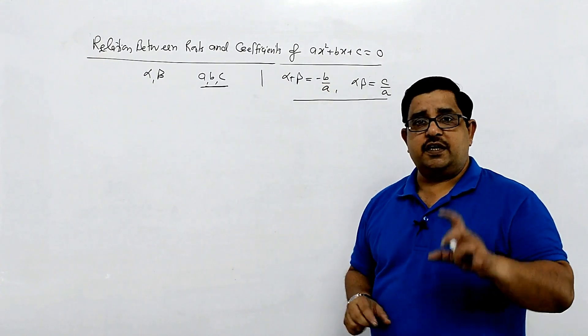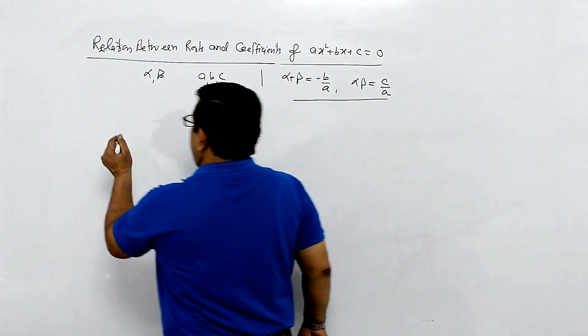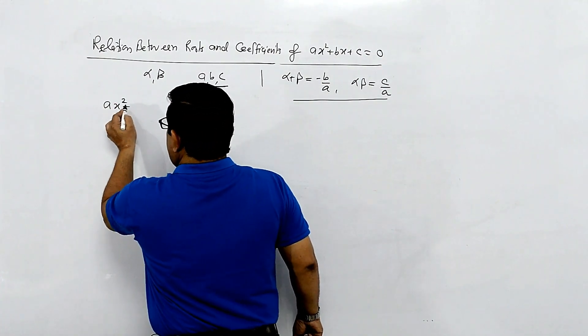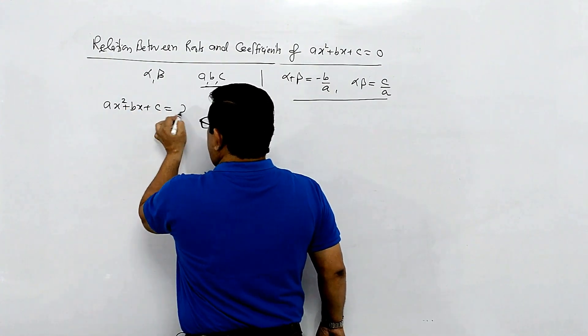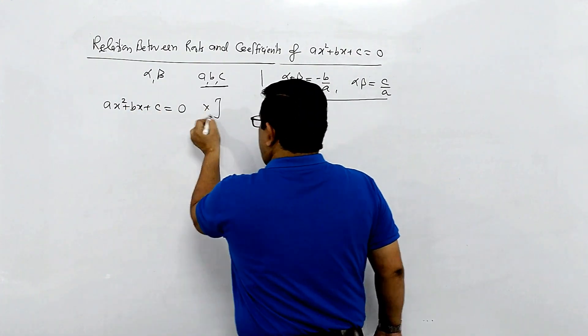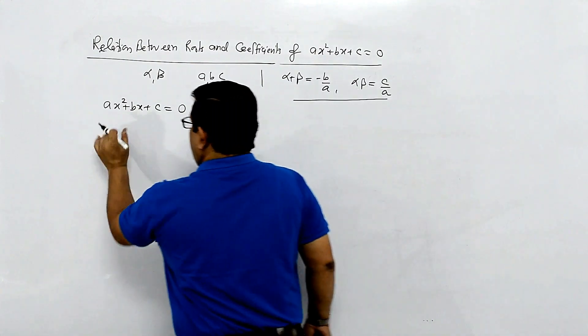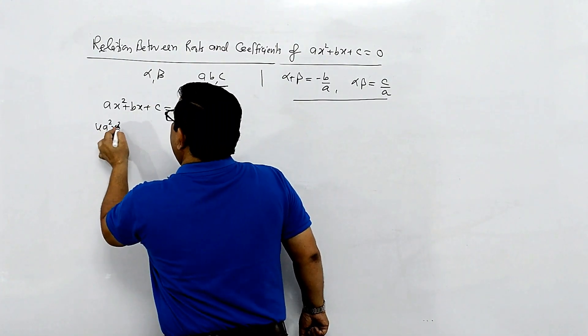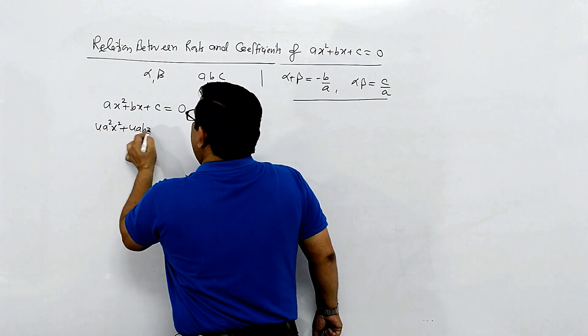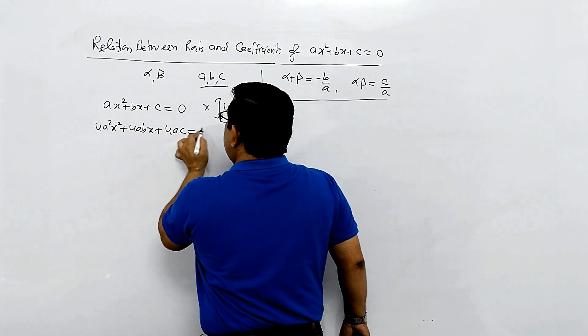Initially, the standard quadratic equation you need to know is ax square plus bx plus c equals zero. If we multiply this equation by 4a, we get 4a square x square plus 4abx plus 4ac equals to zero.